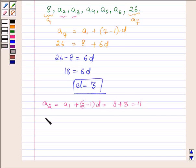Now let us find A3. So A3 is A1 plus 3 minus 1 into D. So this is 8 plus 3 into 2, since 3 minus 1 is 2. So this is equal to 8 plus 6, which is equal to 14.